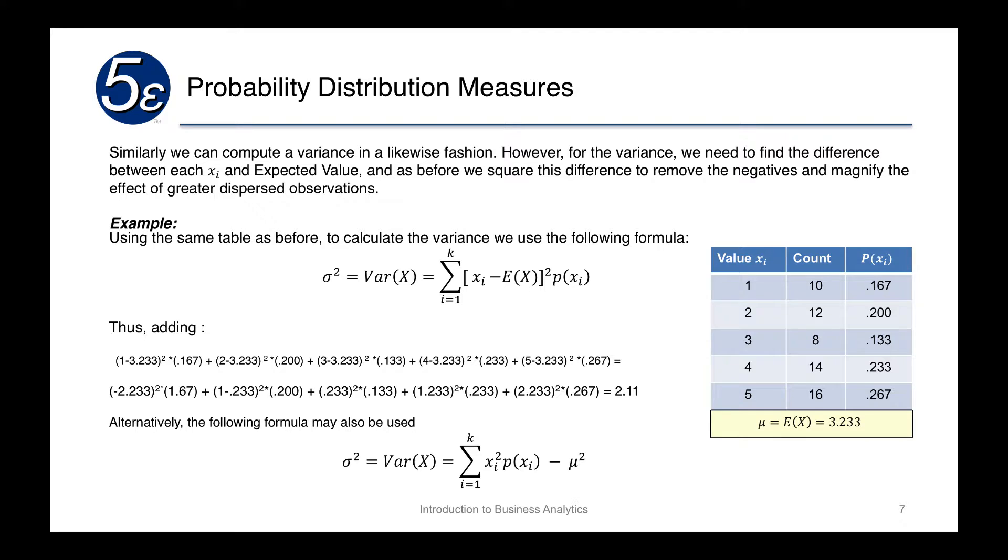Similarly, we can compute variance in a likewise fashion. But for the variance, we need to find the difference between each xi and the expected value. Remember, the reason we did this is because with the variance, we're looking for how far the dispersion is around the mean. Since our mean is our expected value, we're basically looking for the difference between each xi and the expected value. Remember that we square this so that we can get rid of negative numbers, and we also square it because it will magnify the effect of greater dispersed observations. The further it is away, by squaring it, it makes the number even bigger.